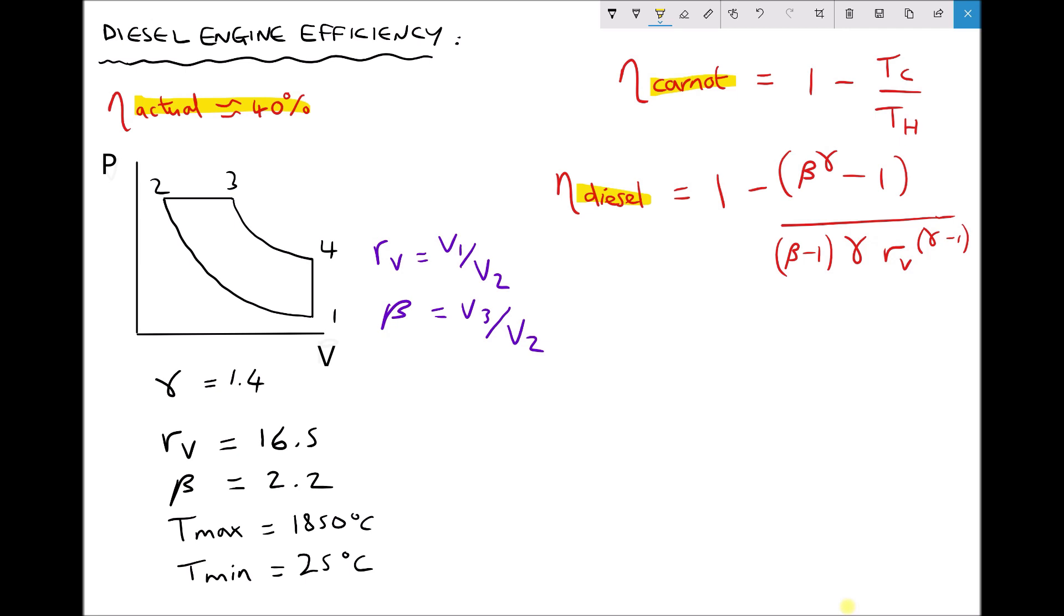First of all we have gamma which is the polytropic index for adiabatic processes. Now when we have adiabatic compression and expansion the value of gamma is 1.4.